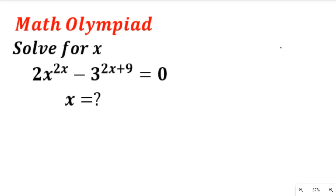Hello STEAM viewers, welcome to our video tutorial for today. In our tutorial today, we are going to consider the solution to this maths Olympiad question. We are asked to solve for x in 2x to the power of 2x minus 3 to the power of 2x plus 9, equal to 0.